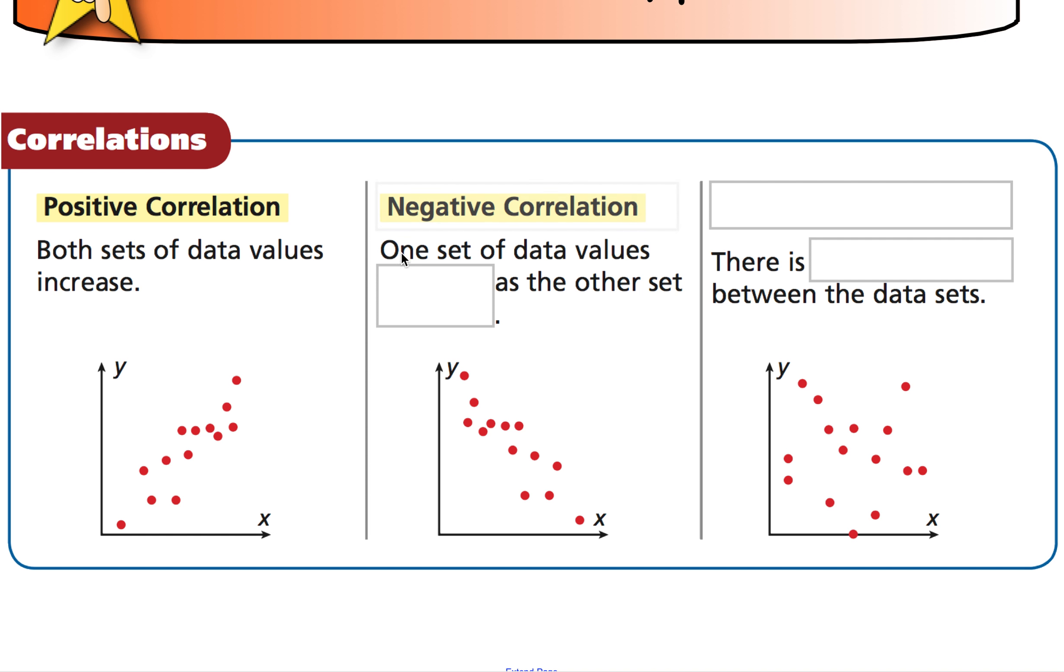And then we have a negative correlation. One set of data values increases as the other set decreases. So as we go along here, our x-values are getting bigger, but our y-values are getting smaller. So that's a negative correlation. And then this one, we just kind of have dots all over the place. That's called no correlation. And that's when there is not necessarily any relationship that we can draw between the data sets. They don't follow any pattern.